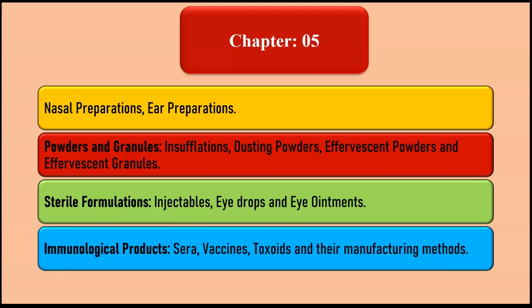Also in chapter five, we are going to study immunological products, covering sera, vaccines, toxoids, and their manufacturing methods.